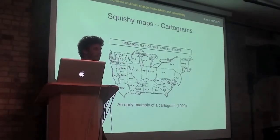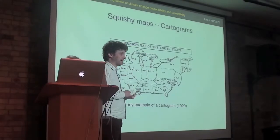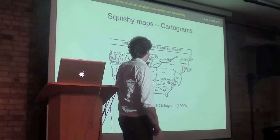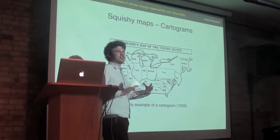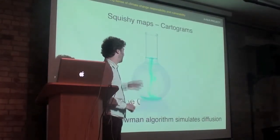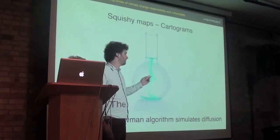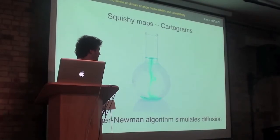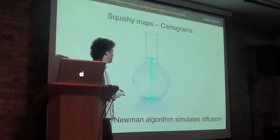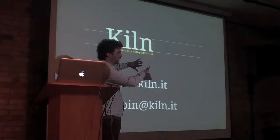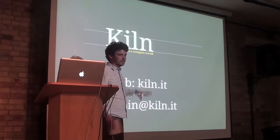The other device that the site relies on very heavily is the so-called area cartogram, which is a cartographic technique where you represent something other than the actual area of the country by the area on the map. The technique that we're using was invented in 2004 by a physicist and a photographer working together, and it relies on simulating diffusion to calculate where the borders of the map should go.